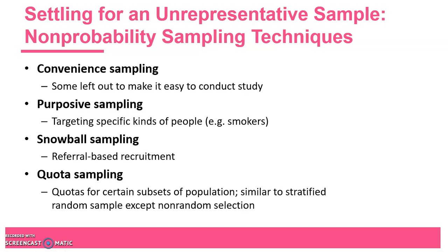Some non-probability sampling methods: convenience sampling — you just go with those who are easy to come by. Purposive sampling is where you're not trying to get a random sample but targeting specific kinds of people, like smokers. Snowball sampling is especially useful for studying rare groups — you harness the power of referral and word-of-mouth so that participants contact their friends to join the study. Quota sampling is similar to stratified random sampling in that you determine subsets of the population, but then non-random sampling occurs within each subset — perhaps convenience sampling — just trying to reach certain numbers within different subgroups.